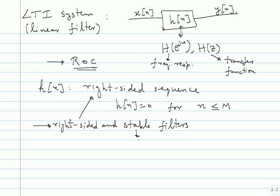What do I mean by stable? Bounded input, bounded output stability in the time domain means the sum of absolute values of h of n should be less than infinity. In the Z transform domain: all poles should be inside the unit circle, or the region of convergence should contain the unit circle, so that H of e power j omega is defined. Once the frequency response is defined, it is going to be stable.